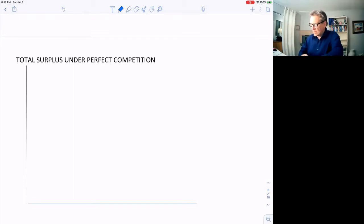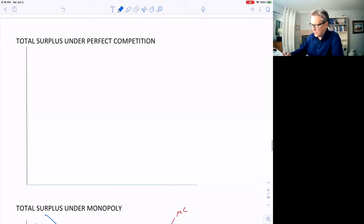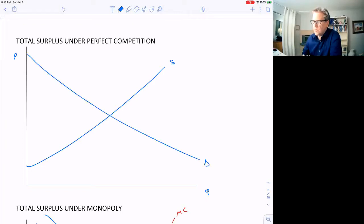So first, let's take a look at a perfectly competitive market and review again what total surplus is. We've got this supply curve, upward sloping, demand curve, downward sloping. In equilibrium, we have Q star that's produced and a price of P star.